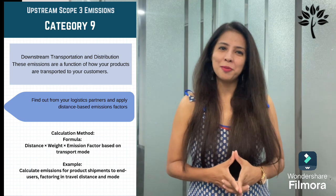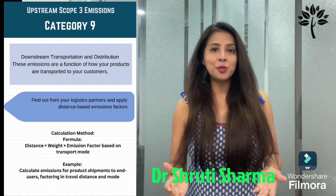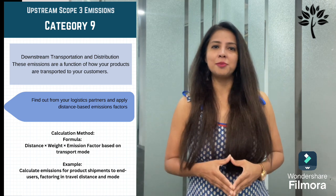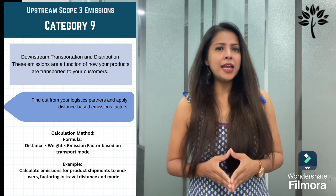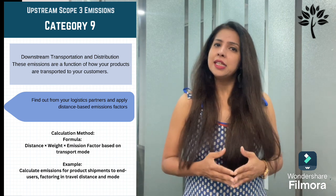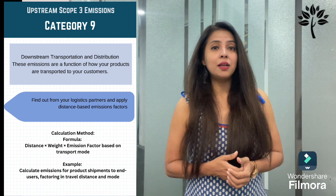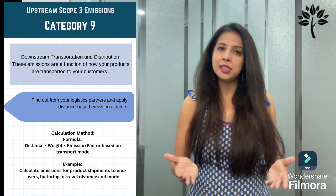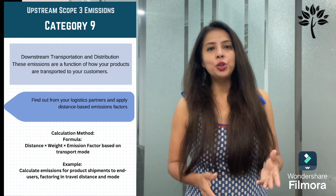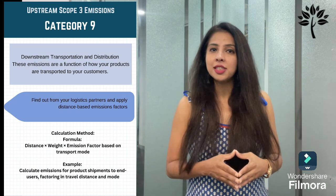Now for downstream scope 3 emissions. Category 9 is downstream transportation and distribution — once your product leaves your hands, how is it transported to the customer? Find out from your logistics partner and apply distance-based emission factors. The calculation method is: distance × weight × emission factor based on transport mode. Activity data includes quantity of goods, transportation mode, and distance to consumer. Emission factors are mode-specific. For example, calculate emissions for product shipments to end users factoring in travel distance and mode.